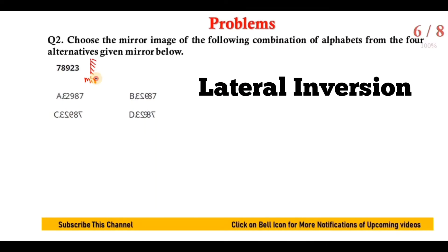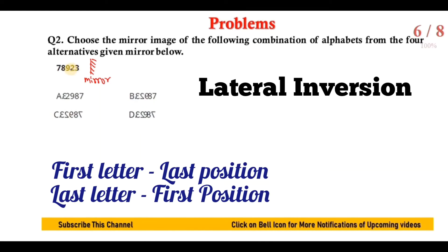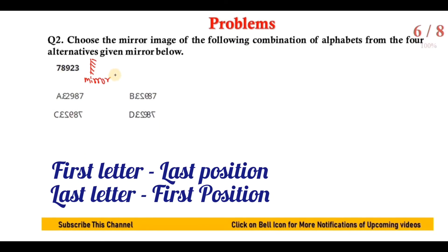For the second problem, the mirror is placed aside and based on lateral inversion — size unchanged, direction changed, first at last and last at first — for the number 7 8 9 2 3: 3 is reflected, then 2 is reflected, then 9 is reflected, then 8 is reflected as the same (since 8 is the only number from 1-9 that reflects identically), and 7 is reflected last.